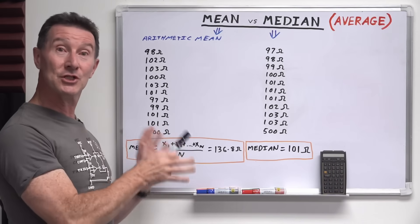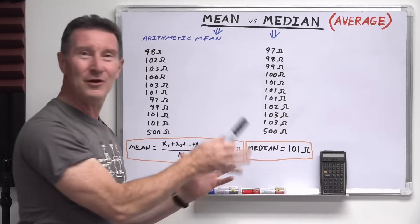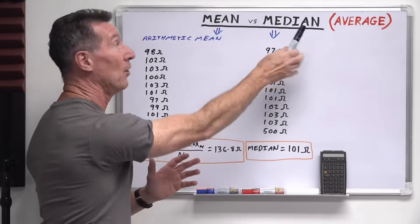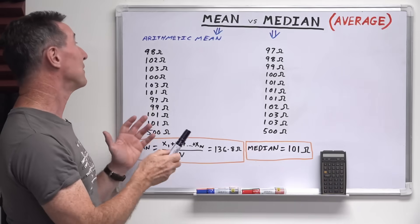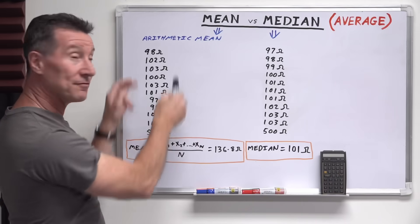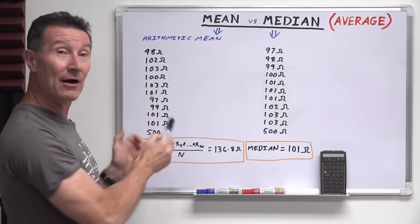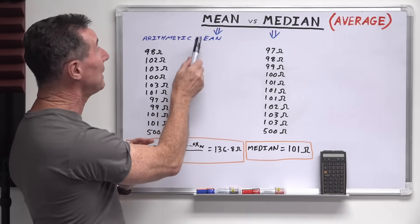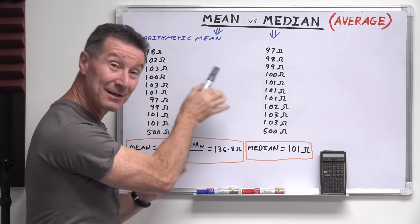Anyway, let's go through an example here to show you, because almost all of you surely are familiar with what an average is. An average is simply, if you've got a collection of data, the average or the mean or the arithmetic mean.